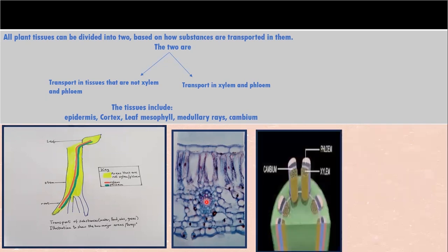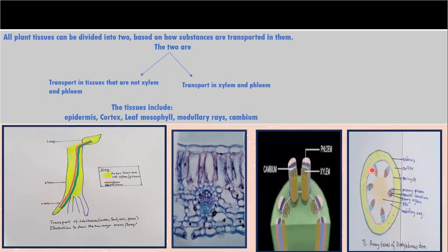We can also look at the stem — the cortex, medullary rays, cambium, and pith — where substances are transported in a way very different from xylem and phloem. Similarly, in the root section, we have the epidermis, cortex, pericycle, medullary rays, and pith. Substances are transported in these tissues the same way as other non-vascular tissues, but very differently from how substances are transported in the xylem and phloem.